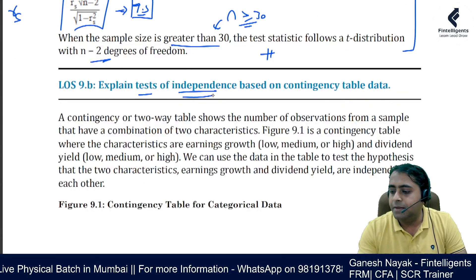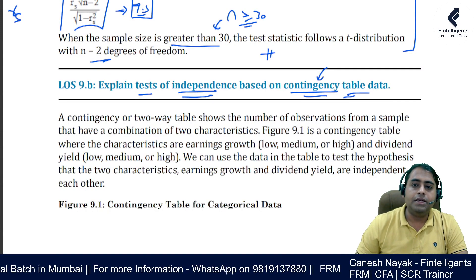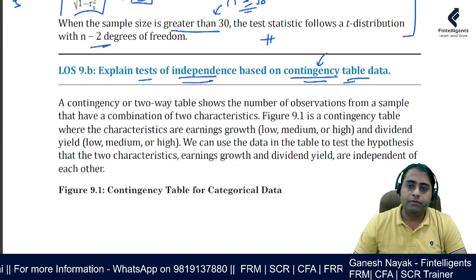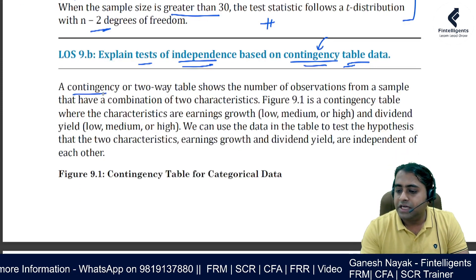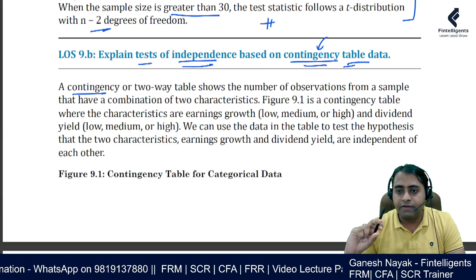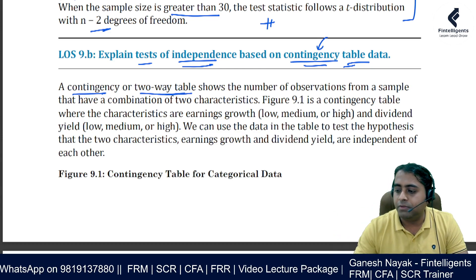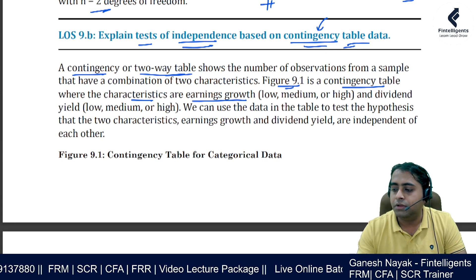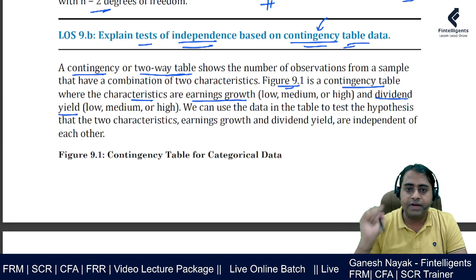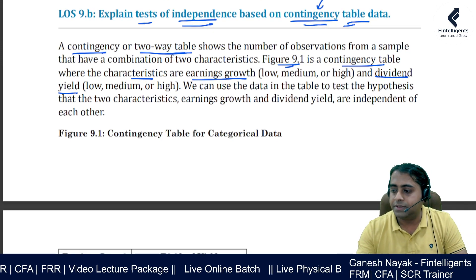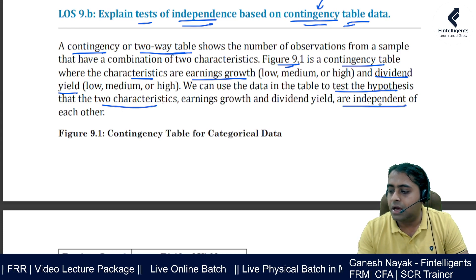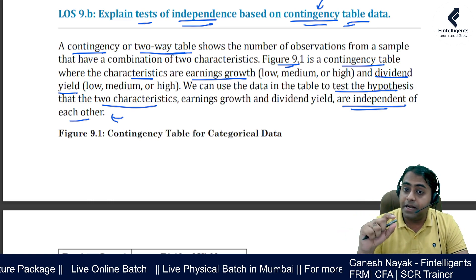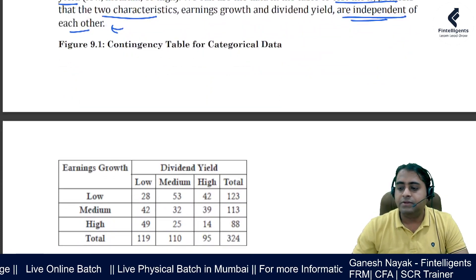The next section explains the test of independence based on contingency table data. A contingency table is a two-way table where one event may lead to another. For example, in Figure 9.1, the two characteristics are earning growth and dividend yield. We want to test the hypothesis that these two characteristics are independent of each other — that is, whether they are contingent or independent.